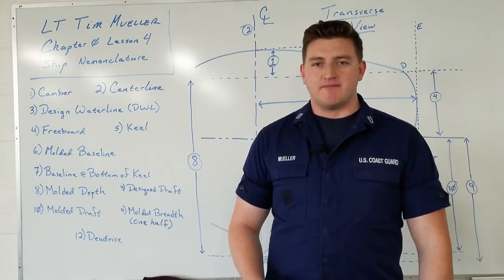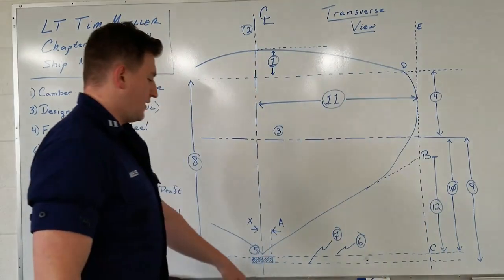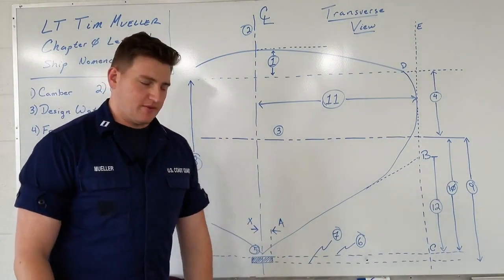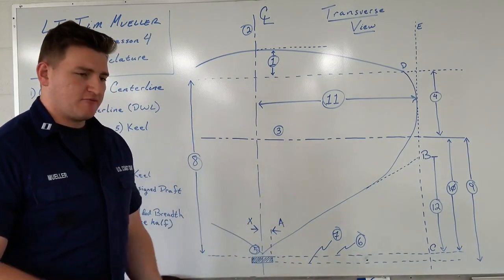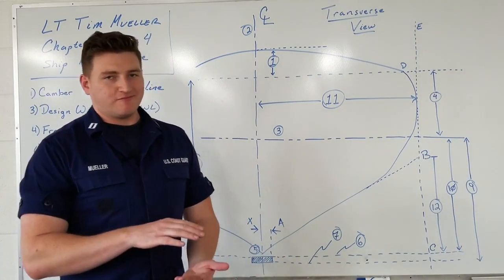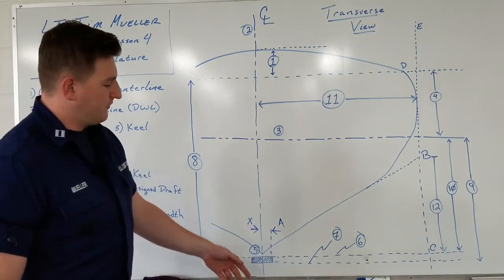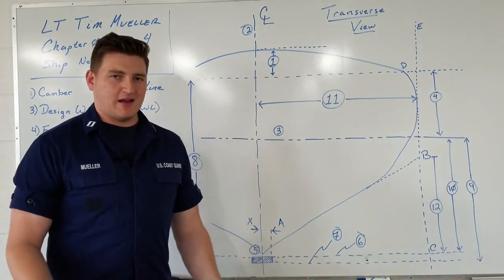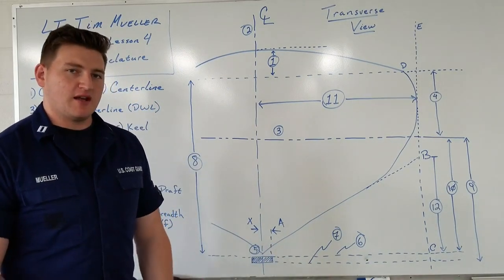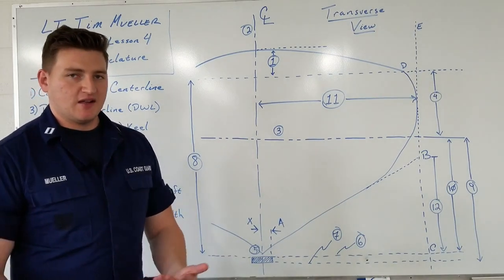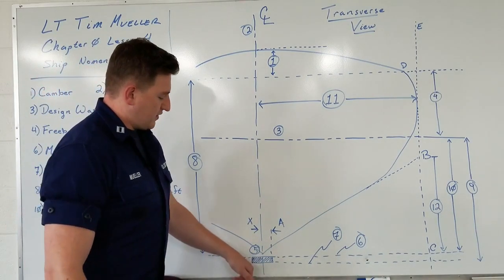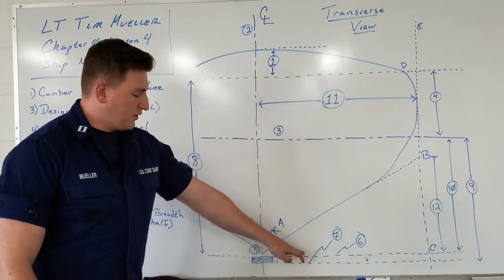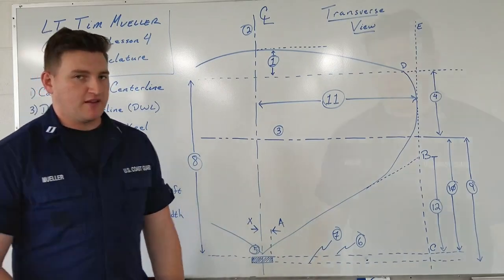The next two terms are the molded baseline (number six) and the baseline at the bottom of the keel (number seven). On some smaller ships, the keel might be only a foot or two, so the distance between these two baselines may not be significant. However, on larger naval ships such as LHDs or aircraft carriers, the keel can be enormous, making this distance quite significant.